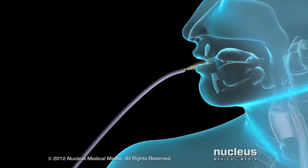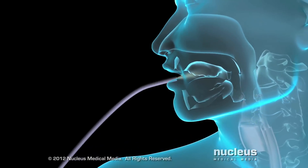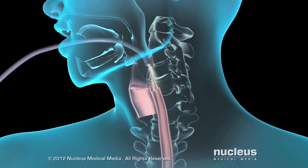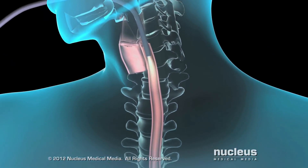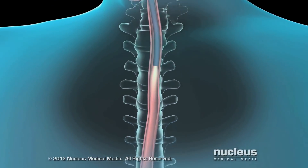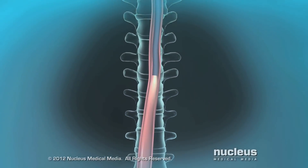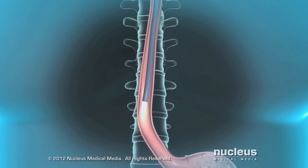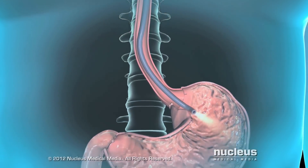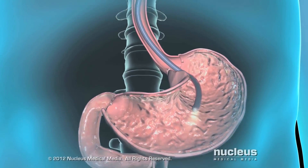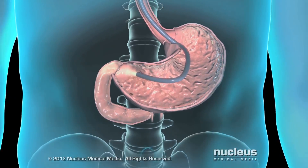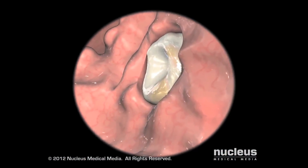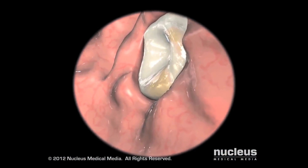Uncomplicated upper endoscopies take between 10 and 20 minutes. Your doctor will gently insert the endoscope through your mouth and then slowly and carefully move it down your esophagus until it reaches your stomach and finally your duodenum. You should feel no pain as this is happening.